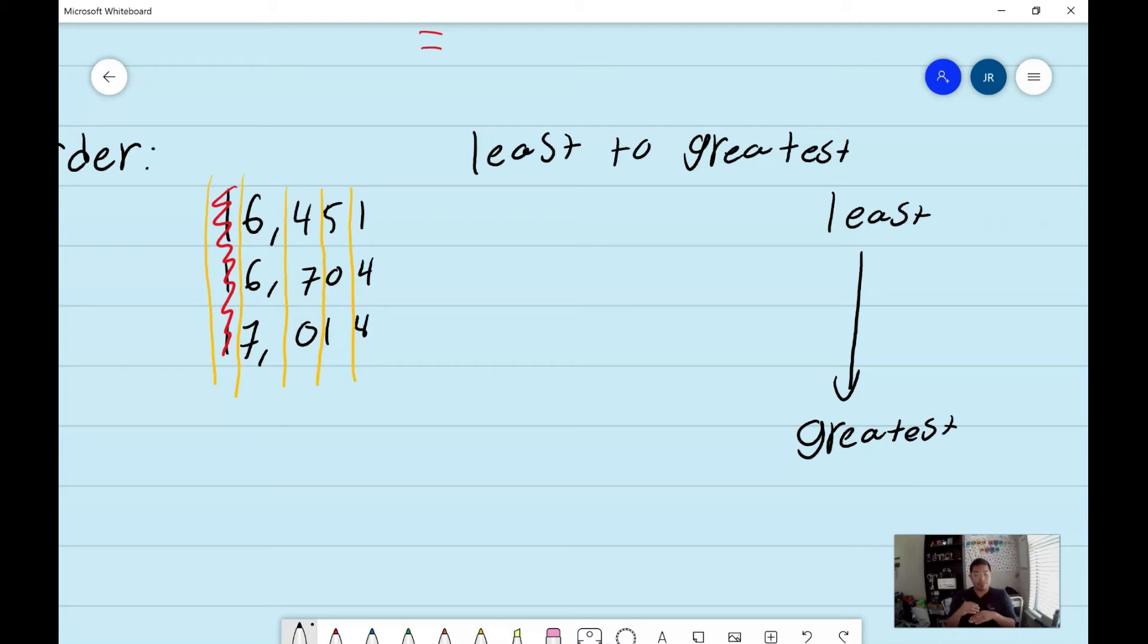Now, vamos a poner los números en menor a mayor. So aquí tengo seis, seis, siete. Bueno, ¿cuál es el mayor? ¿Los seis o el siete? Los seis significa que el siete va a ser el mayor número. So aquí voy a poner el número. Ahora tengo seis y seis. So voy a comenzar con el otro número. The seven I decided that's gonna be my greatest number because seven is greater than six and now I have two sixes but that doesn't work out for me so I need to go to the next number.